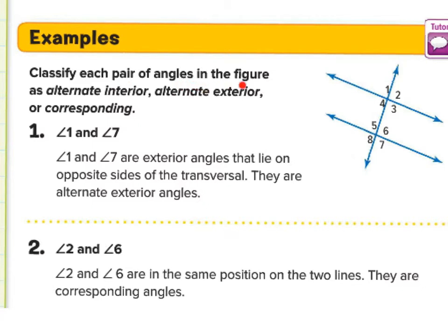Example one: classify each pair of angles as alternate interior, alternate exterior, or corresponding. Angle one and angle seven — here are our parallel lines and transversal. They're both outside the parallel lines, so they're exterior. They go kitty corner — opposite or alternate. So angle one and angle seven are exterior angles that lie on opposite sides of the transversal. They are alternate exterior angles.